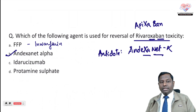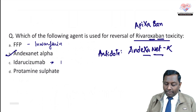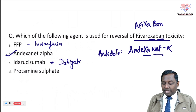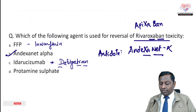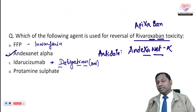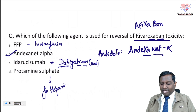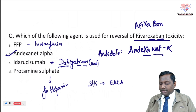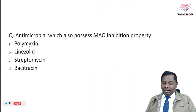Idarucizumab is utilized in dabigatran toxicity. Dabigatran is a directly acting oral thrombin inhibitor — the only oral thrombin inhibitor; all others in its group are injectable. Protamine sulfate is the antidote for heparin. For streptokinase overdose, epsilon-aminocaproic acid or tranexamic acid can be used alternatively.